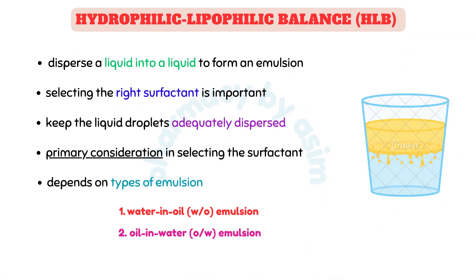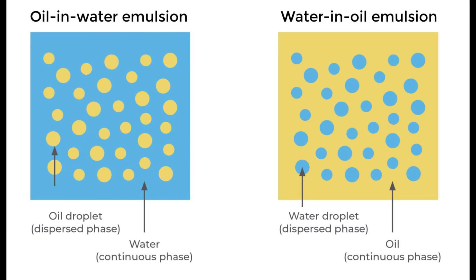When a pharmacist wishes to disperse a liquid into a liquid to form an emulsion, selecting the right surfactant is important to keep the liquid droplets adequately dispersed. A primary consideration is whether the emulsion is a water-in-oil or oil-in-water type. The taste of water-in-oil emulsions is not palatable, so they are primarily used topically, while oral formulations are typically oil-in-water emulsions.